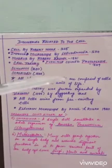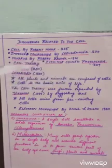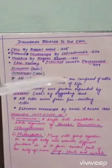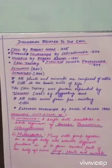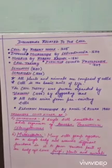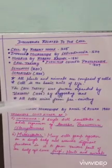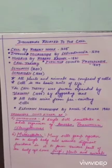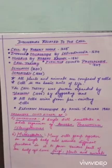According to the cell theory, all plants and animals are composed of cells, and the cell is the basic unit of life — meaning anything that is living is made up of cells. The cell theory was further expanded by Virchow, who said that all cells arise from pre-existing cells. This means there is always a mother cell which divides to form daughter cells.